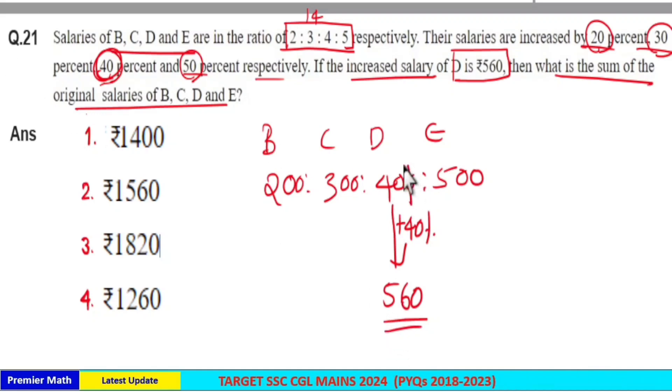So which is correct? Which means here salaries of B, C, D and E are 200, 300, 400 and 500. Then sum is equal to 1,400. Sum is 1,400. Option 1 is your answer.